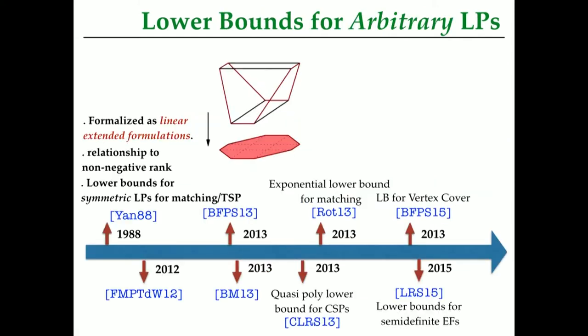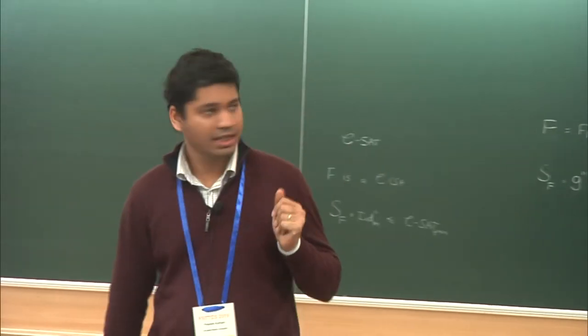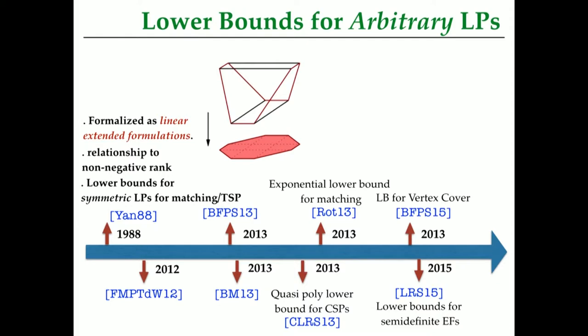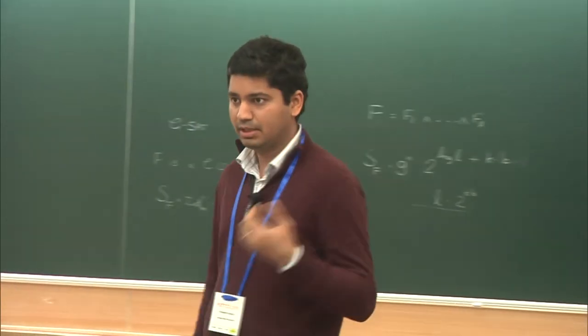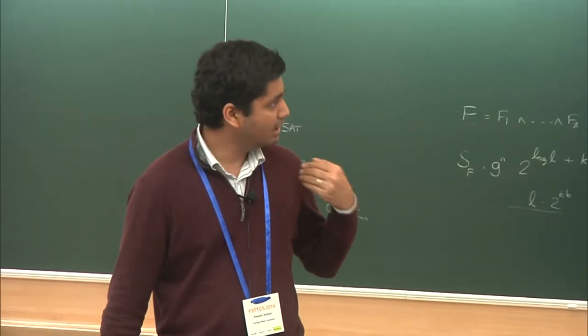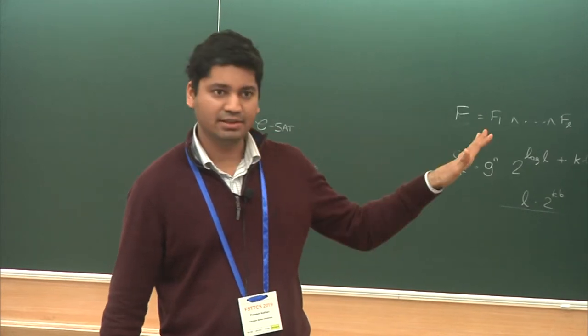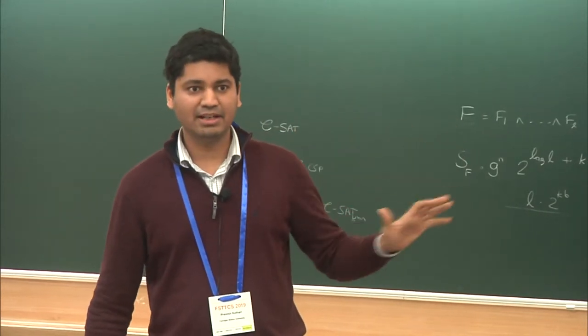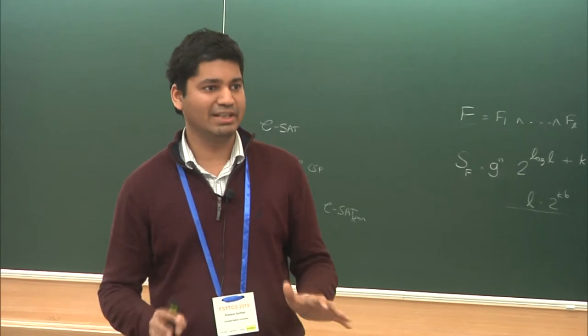This kind of effort was begun and formalized by Yannakakis. Not much really happened after Yannakakis's monumental work until around 2012, where this area broke open with the work of Fiorini, Massar, Pokutta, Tiwari, and DeWolf, who showed an exponential lower bound for the traveling salesman problem — the TSP polytope. Since then, a lot of amazing works have happened. A lot has happened since 2012 in proving extension complexity lower bounds for arbitrary linear programs.